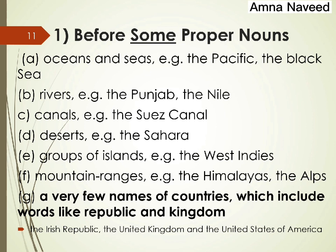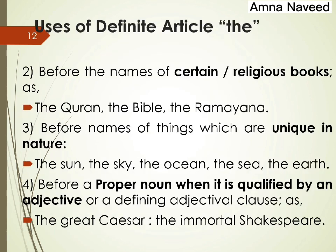There are also a few countries before whose names we use 'the' — for example: the United States of America, the United Kingdom, the United Arab Emirates. However, we do not say 'the Pakistan,' 'the India,' or 'the USA.' We also use 'the' before the names of religious books — for example: the Quran, the Bible, the Ramayana. Similarly, things that are unique in nature take 'the' — the sun, the sky, the ocean, the sea, the earth, the moon — because there is only one of each for our planet or universe.